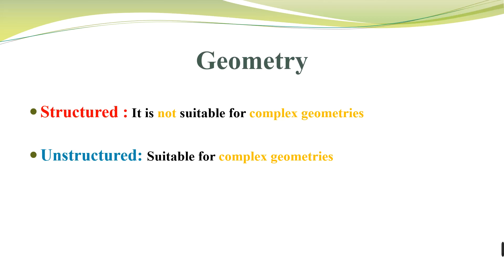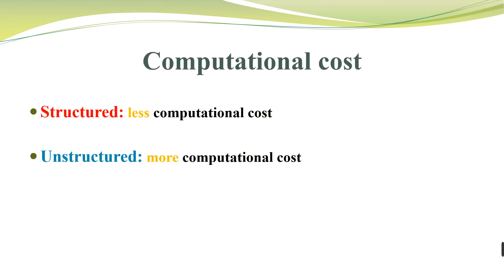In some cases we can use both, and I will talk about this in the third parameter. The next important parameter is the computational cost. In simulations, computational cost is very important for us. In some cases we have to use very small grids to make our simulation results more accurate. If I want to compare structured and unstructured mesh,